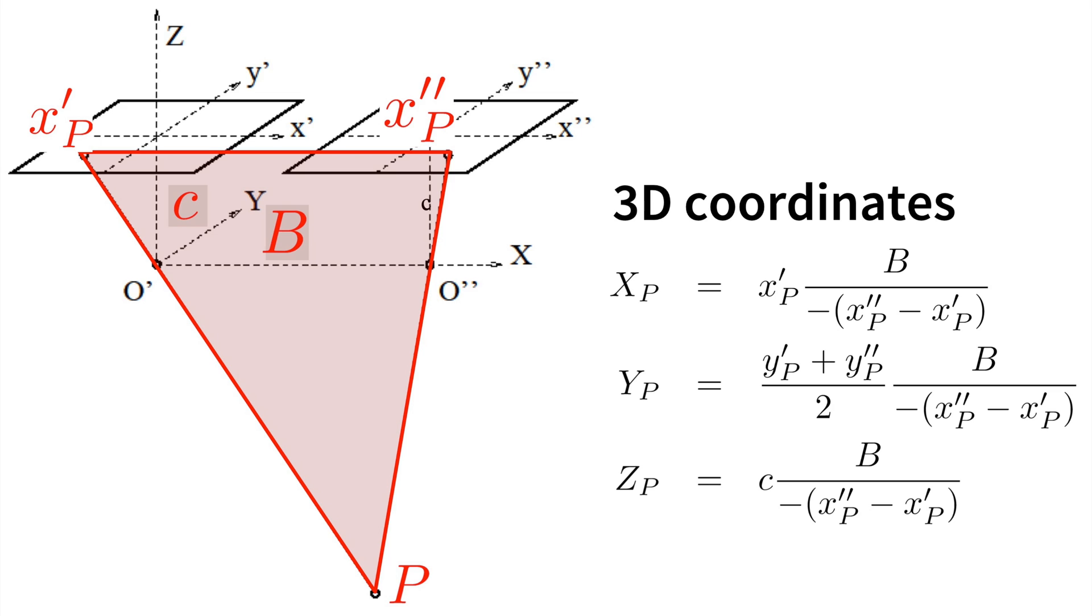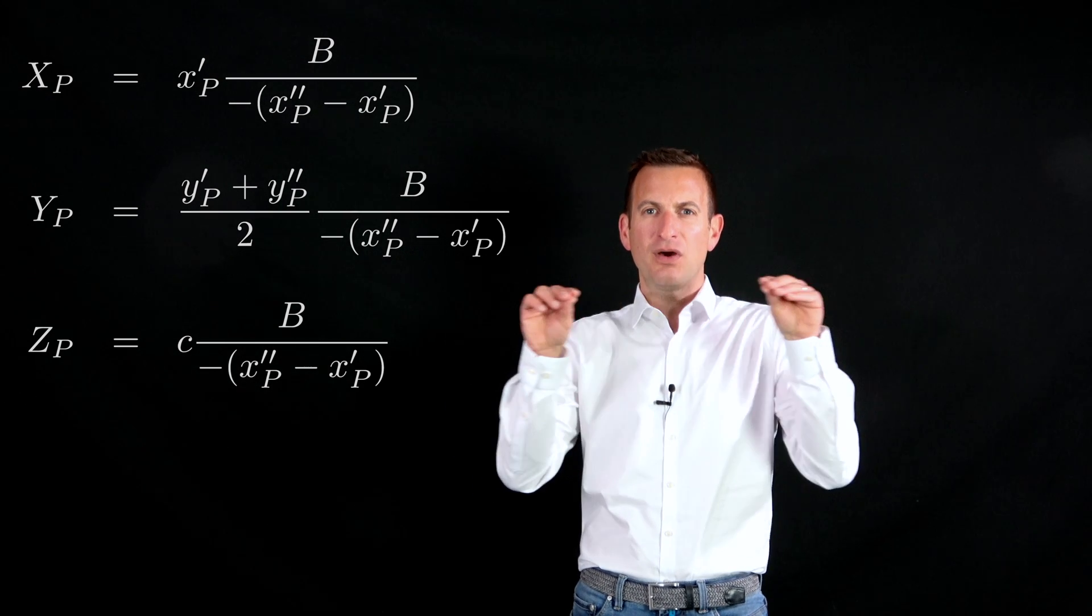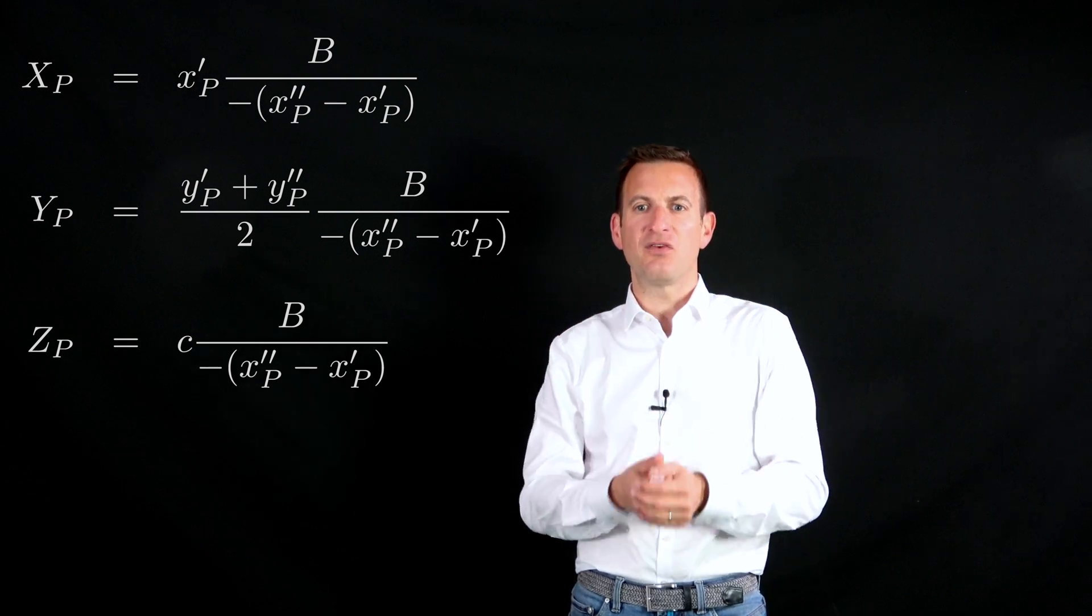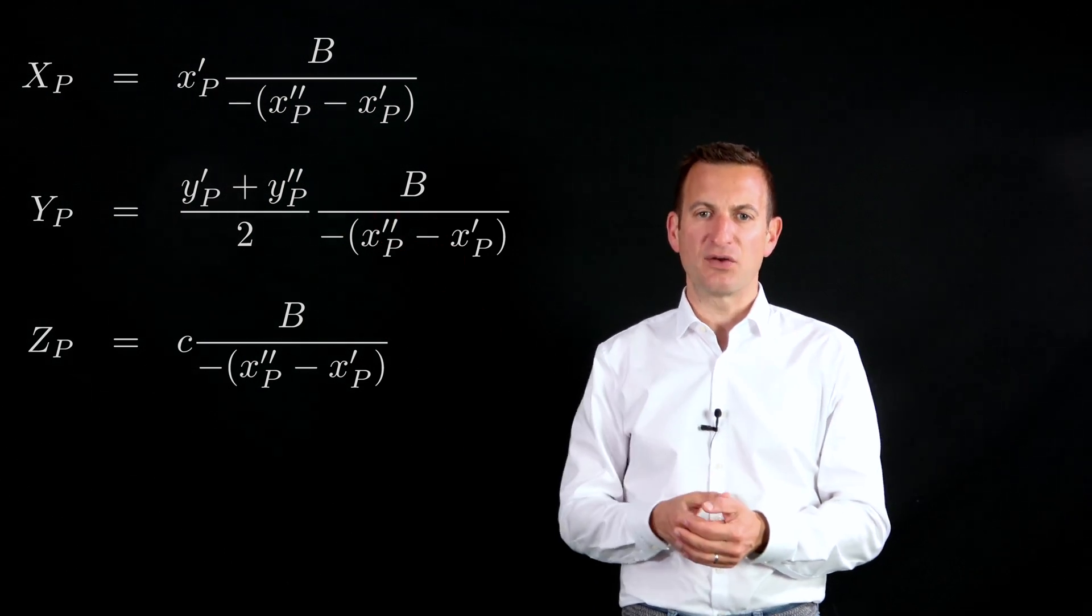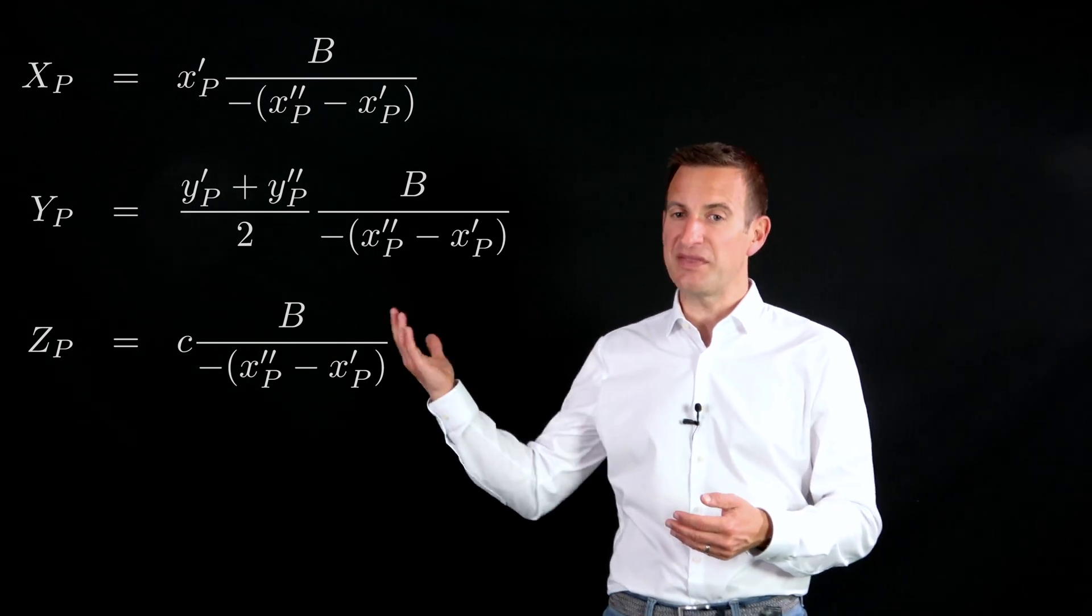So the x location depends on the baseline, which is basically the vector between the two projection centers. So how far are the cameras offset in the x direction? This is capital B over here, which is divided by the negative x disparity. So x disparity is the difference in the x coordinates of these points, so basically just how far are these points offset in the x coordinates in image number one and image number two. This is information which matters here. And I multiply this with the pixel location of that point in image number one. This gives me the x location.